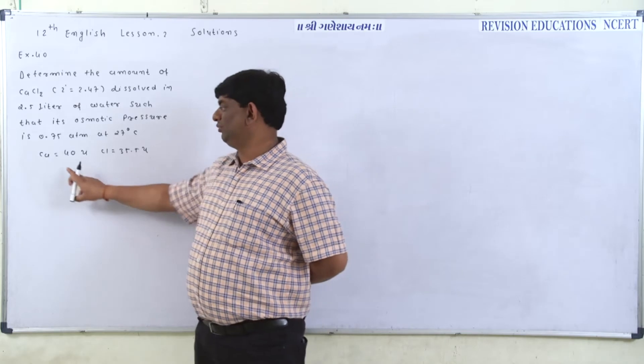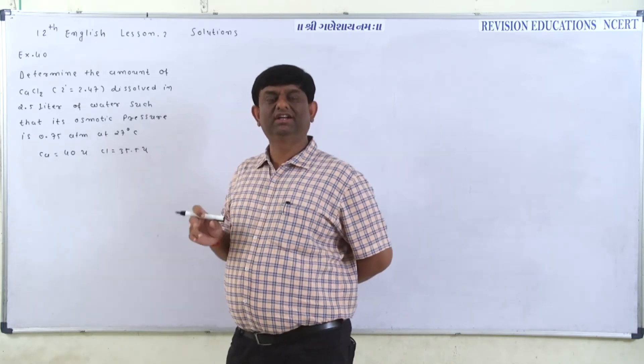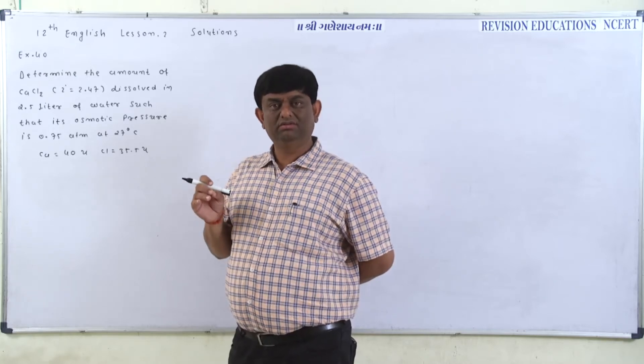The temperature and atomic mass of calcium and chloride is given to us as 40 and 35.5 respectively.